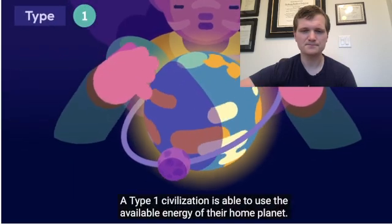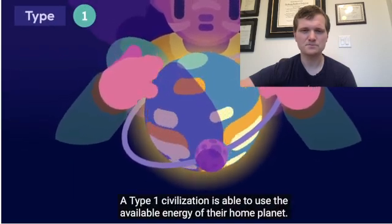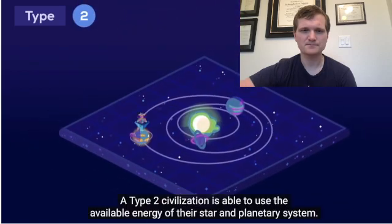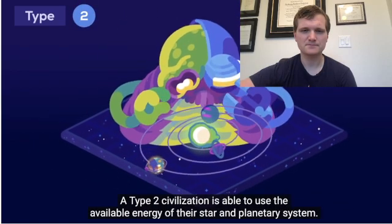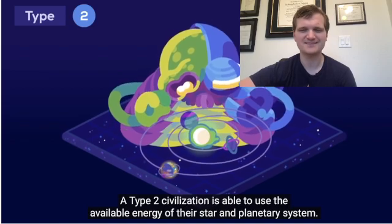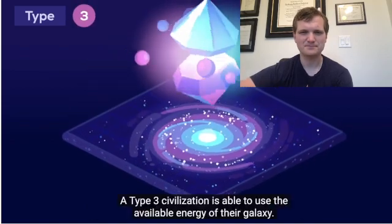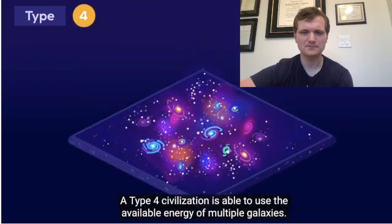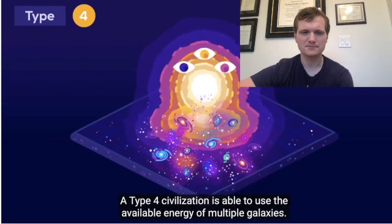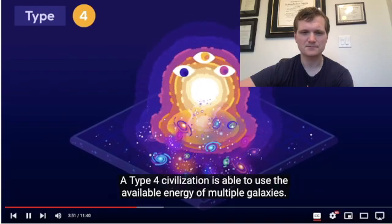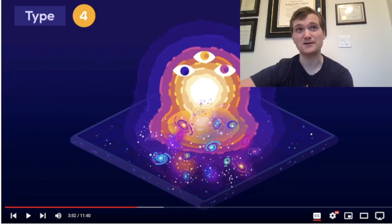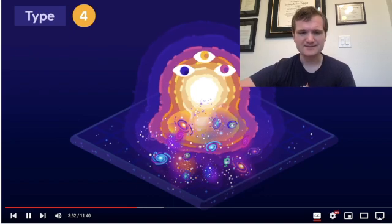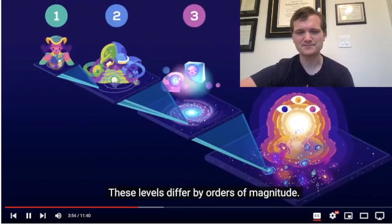A Type 1 civilization is able to use the available energy of their home planet. A Type 2 civilization is able to use the available energy of their star and planetary system. A Type 3 civilization is able to use the available energy of their galaxy. A Type 4 civilization is able to use the available energy of multiple galaxies. So one's like a futuristic Earth, two's like Star Trek, three's like Star Wars, and I've actually never heard of four — that's interesting.